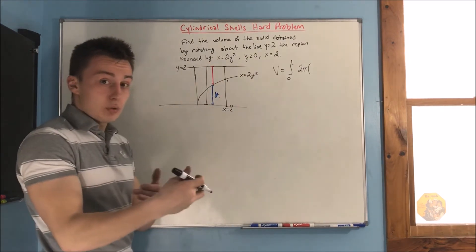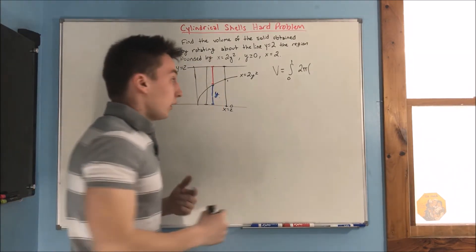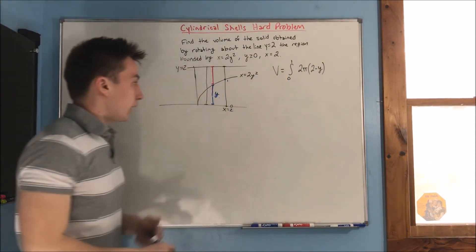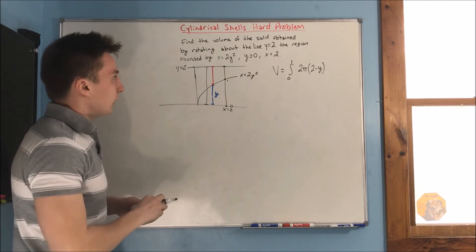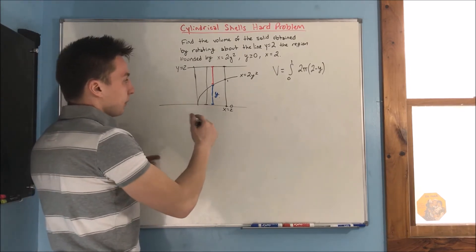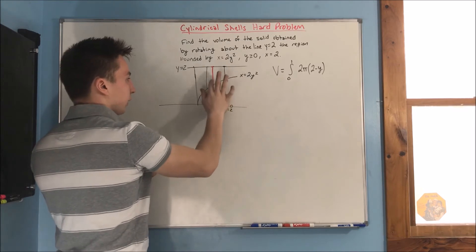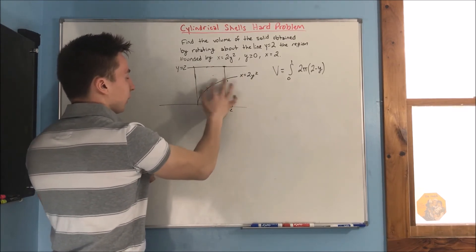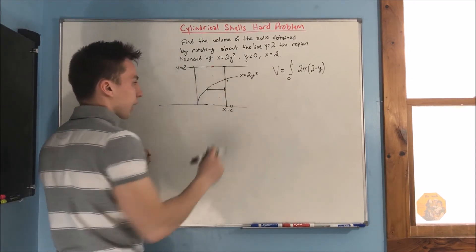y, 2 minus y is going to give us that red line. 2 minus y. Now, what is our height going to be? What is our height? Our height is going to be the distance from, let me erase this piece right here. Our height,